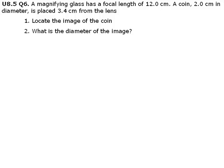Unit 8.5 Question 6. A magnifying glass has a focal length of 12.0 cm. A coin, 2.0 cm in diameter, is placed 3.4 cm from the lens.